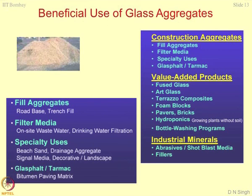Glasphalt and tarmac are nothing but bitumen paving matrices where this system can be used. Bitumen is a natural product and is becoming very scarce. The more industrialization and population growth, the more roads and pavements require topping. It comes out of natural formations and coal beds, and is a form of coal. Everything in civil engineering right now is under threat from environmental scarcity.